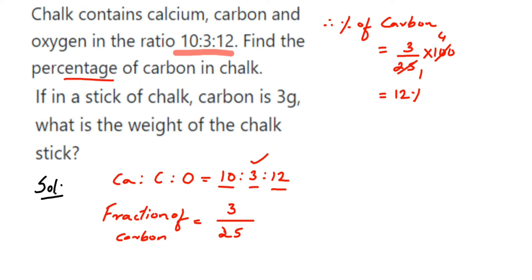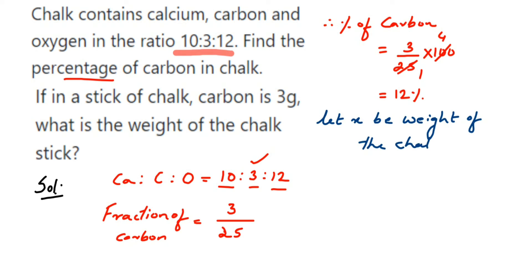Next we have to find the total weight of the chalk. Since we don't know the weight, we assume x is the total weight of the chalk. We are given that carbon is 3 grams. Out of the total weight, 3 grams is carbon, which means 12% of the total weight x equals 3 grams — because 12% of whatever the weight of the chalk is equals 3 grams.